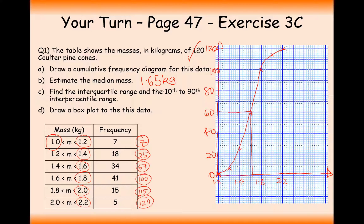Find the interquartile range and the 10th to 90th interpercentile range. So for the interquartile range I need a marker at 30, which is going to be approximately 1.42. So it's going to be something subtract 1.42. And for the upper quartile that's going to be at 90 pinecones. Try and be as accurate as you can. 1.78 I reckon. So what's 1.78 subtract 1.42? That's going to be 0.36. So the interquartile range is 0.36 kg.